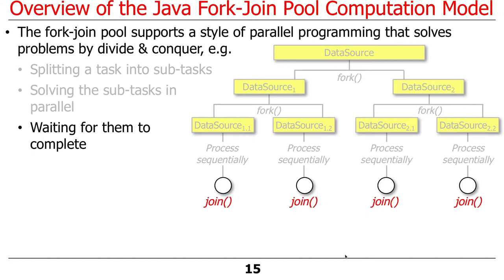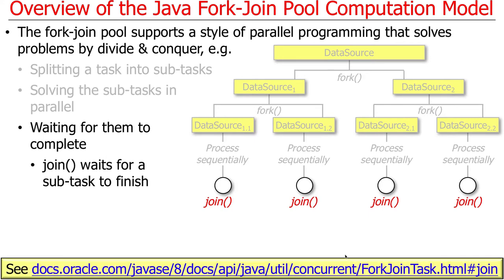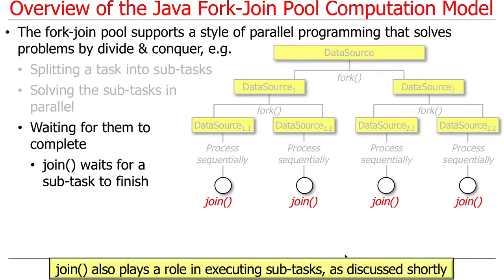At some point, your program can't make progress until the subparts are done, so you wait for them using something called join. Join is used to wait for subtasks to finish. In the ForkJoin framework, join does some additional things beyond a regular Java thread join. Java thread join simply blocks and waits for another thread to finish. With the ForkJoin framework, because it's implemented atop a pool of worker threads, the join method can actually play a role in executing subtasks.